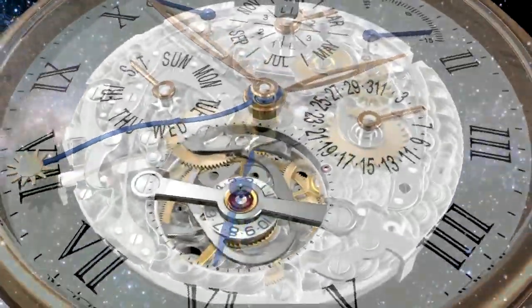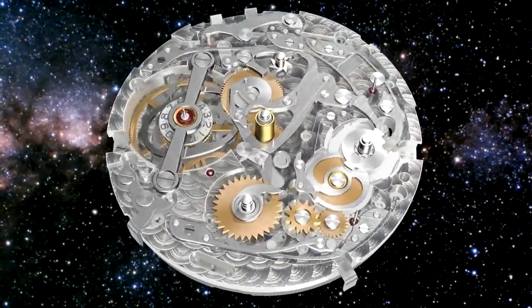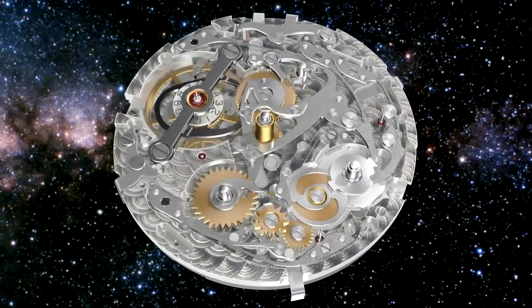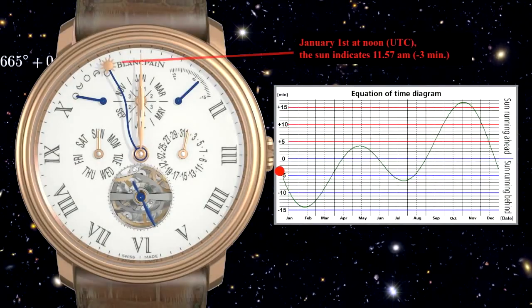The equation of time is the measured difference between apparent solar time and the mean solar time or watch time.